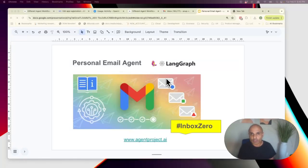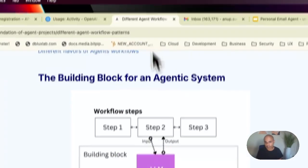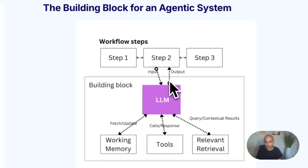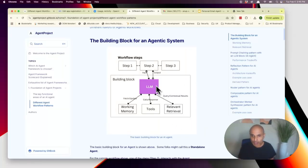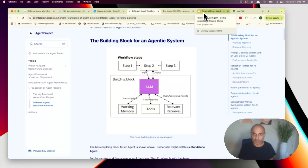I will walk you through the pattern we're going to use — the same building block from the last video: an LLM which can talk to tools, work with memory, and do relevant retrieval. That's the building block for an AI LLM agent. Here I'm primarily going to use tools — specifically the Gmail API to get emails — and I'll be using state within LangGraph.